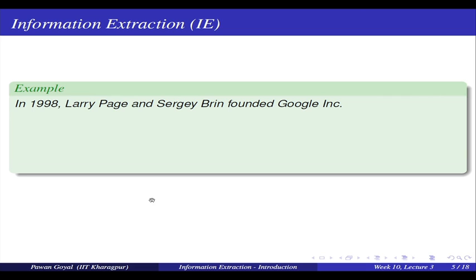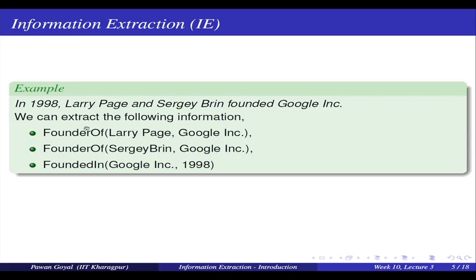Once you do this extraction you will have all these tuples - you will know these two entities are related by this relation, and you can do lot of queries, lot of inferences. This can be very helpful for many question answering tasks. Another example: 'In 1998, Larry Page and Sergei Brin founded Google.' From this sentence, who are the founders of Google and when did they found Google? All this information can be extracted and put in structured form: founder-of(Larry Page, Google), founder-of(Sergei Brin, Google), and founded-in(Google, 1998).